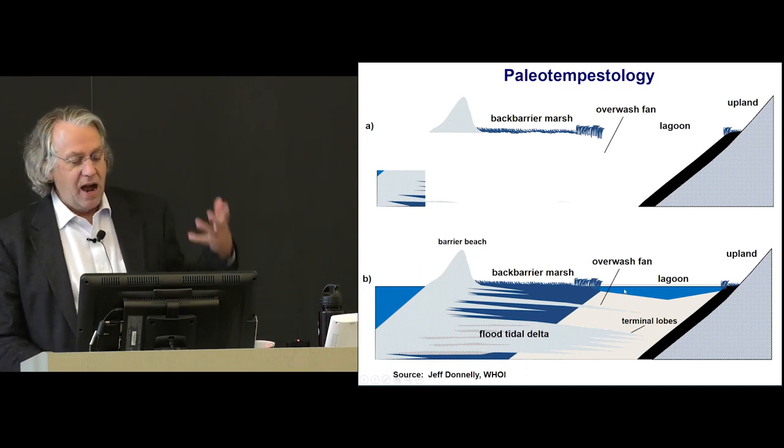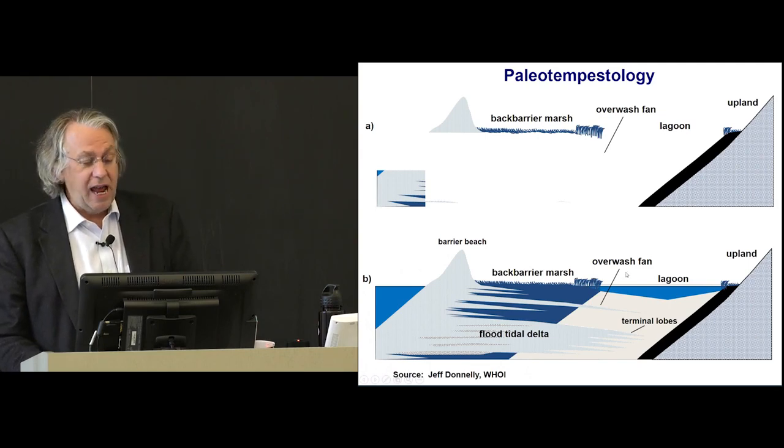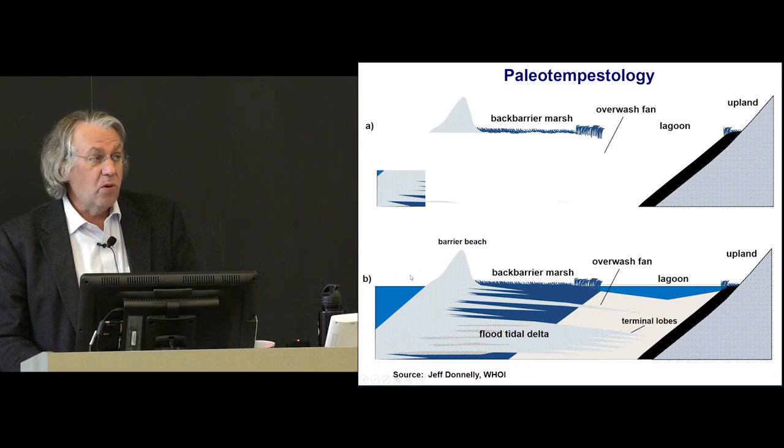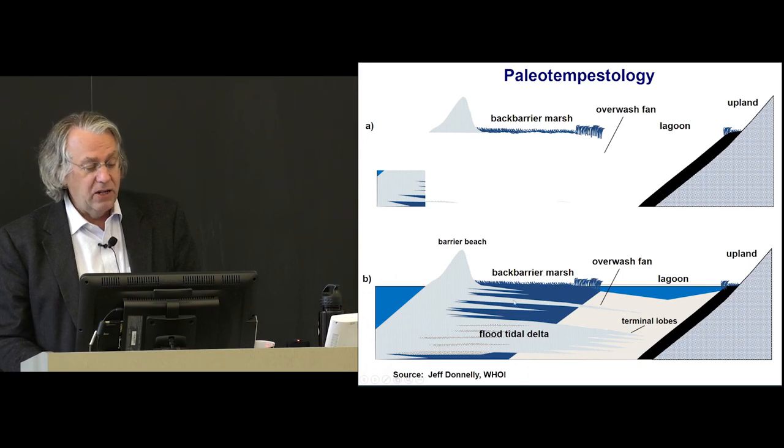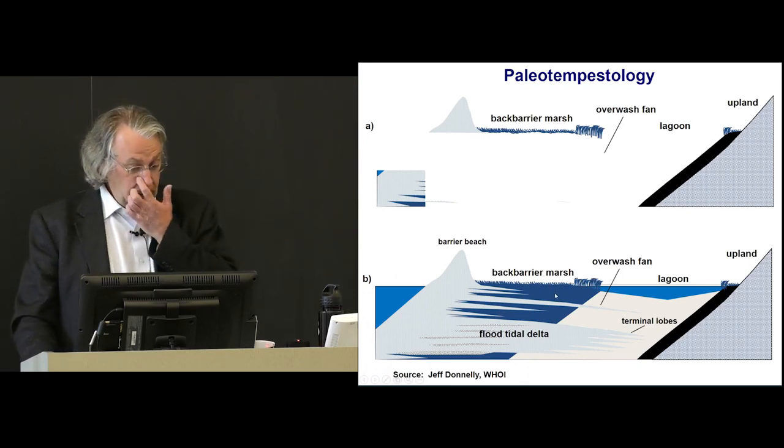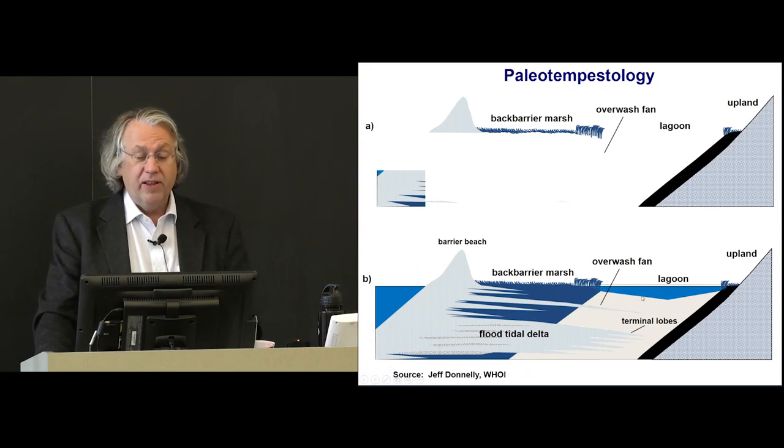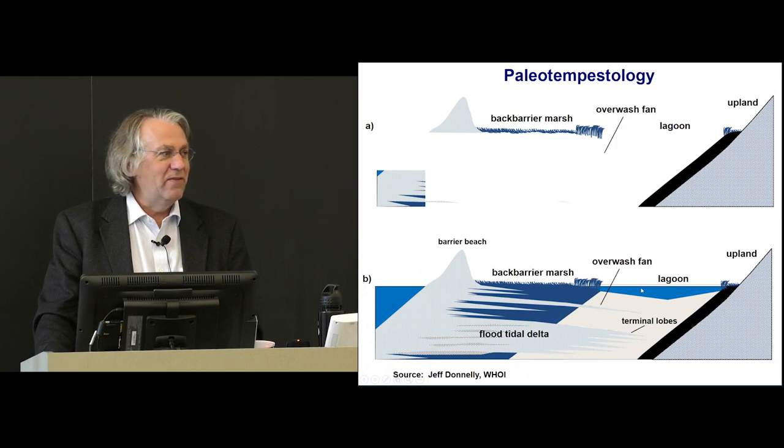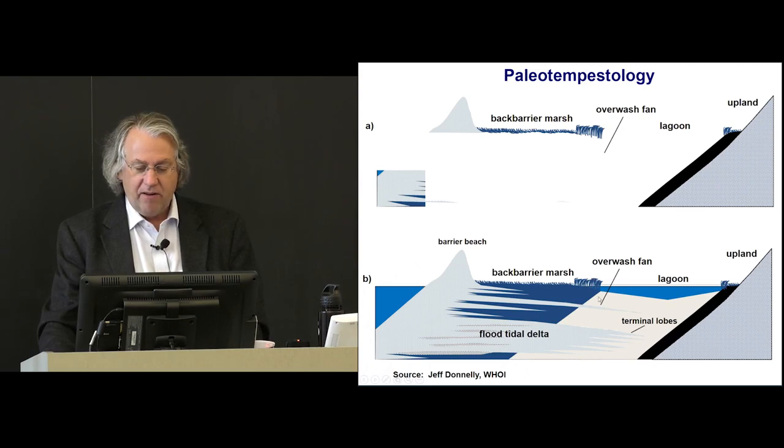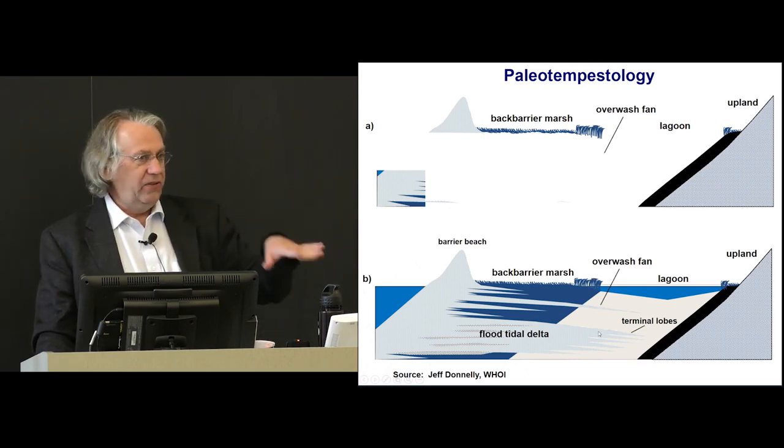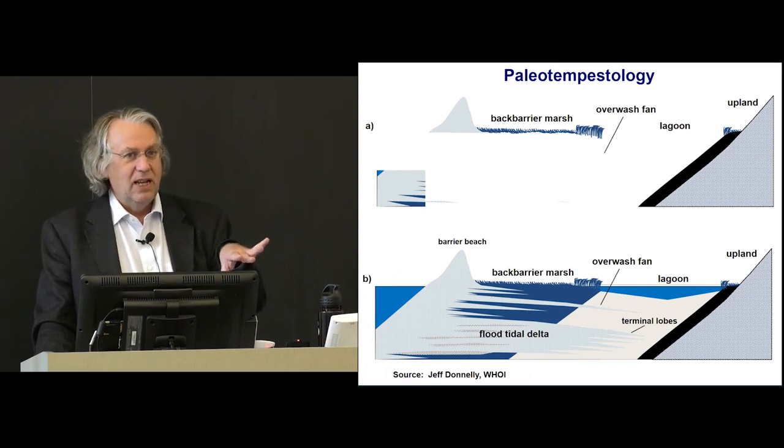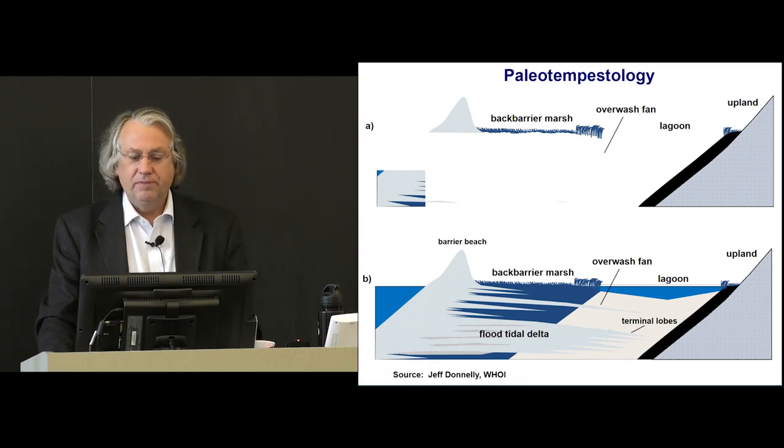In that marsh and lagoon, plants are growing and dying and settling to the bottom and decaying and forming a kind of mud. But when you have a hurricane, one of the most severe manifestations of it is a storm surge. And I'll say more about that in a minute. But that tends to be a big wave, if you will, that washes sand back into these marshes and lagoons. So, if you take a rubber raft and fill it with graduate students, as some of my colleagues have done, and a cheap coring device, and go out in the lagoon, and you drill down and you take a core, you're going to see a layer of mud with these interspersed sand layers where you can radiocarbon date the mud and figure out when those sand layers are put down. So, that's one technique in the field of paleotempestology.